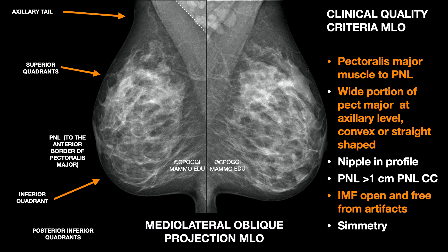Very important for MLO projection is the documentation of the pectoralis major muscle. It should be very extensive in length, anti-depineal at least — which is the line perpendicular to the one that connects the anterior superior angle to the inferior one of the pectoralis major — from the nipple to the anterior border of the muscle itself. It should be wide at the axillary level and convex, because that is the real anatomy.